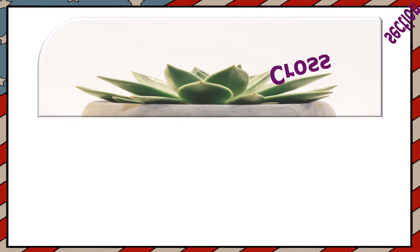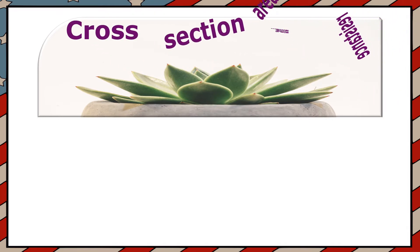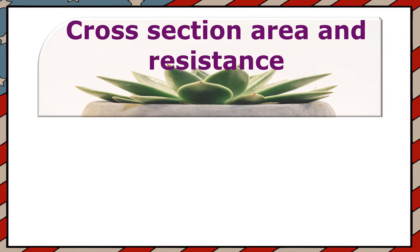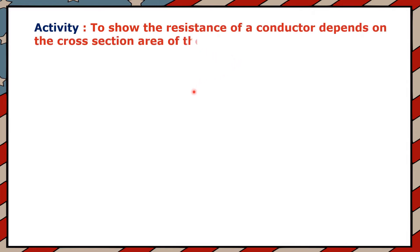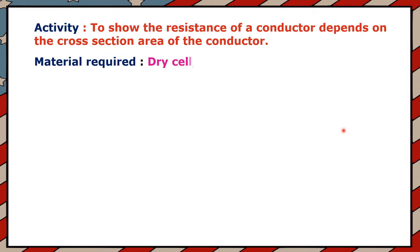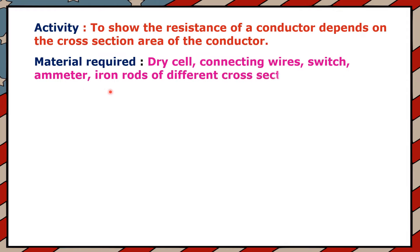So in this video, I will explain the cross-section area and resistance of a conductor — that is, how the resistance of a conductor depends on its cross-section area, discussed through an activity. Here is the activity: to show that the resistance of a conductor depends on the cross-section area of the conductor. The materials required are: dry cell, connecting wires, switch, ammeter, and iron rods of different cross-section areas.